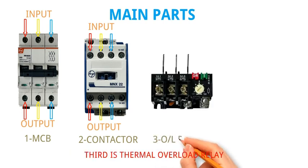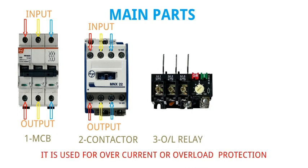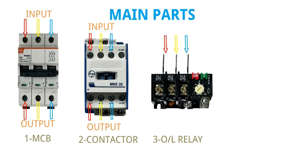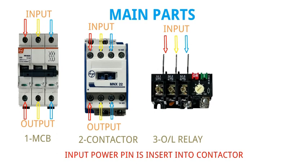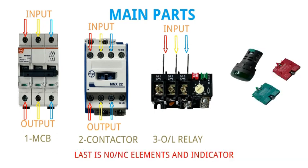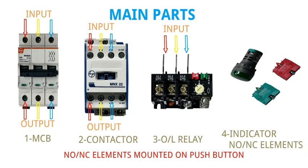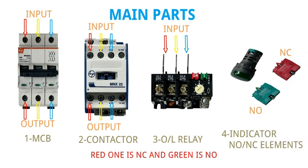Third is the thermal overload relay. It is used for overcurrent or overload protection. It also has six power and some control terminals. The input power pin is inserted into the contactor. Last are the NO/NC elements and indicator — NO/NC elements are mounted on the push button. The red one is NC and the green is NO.